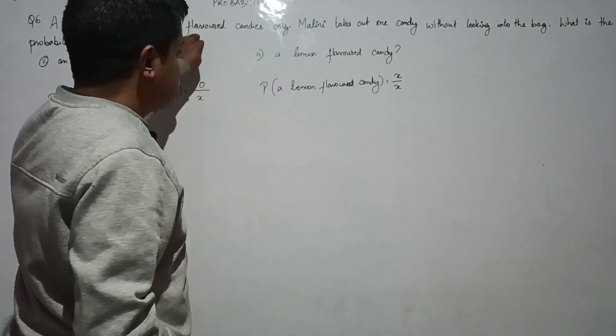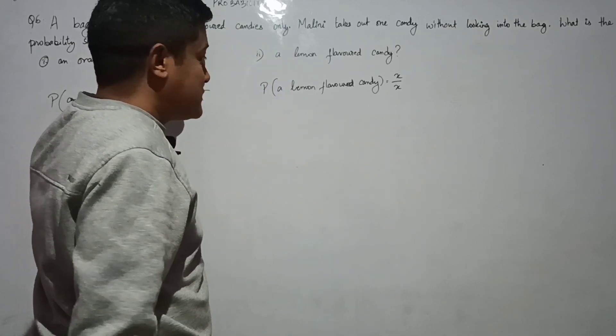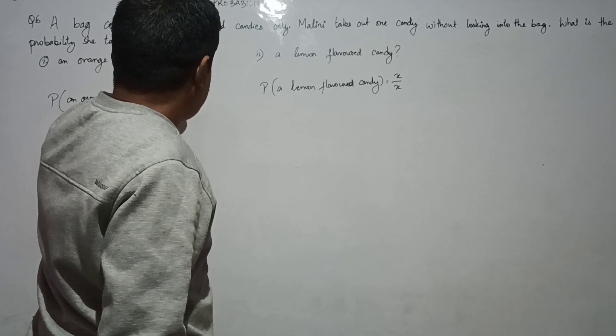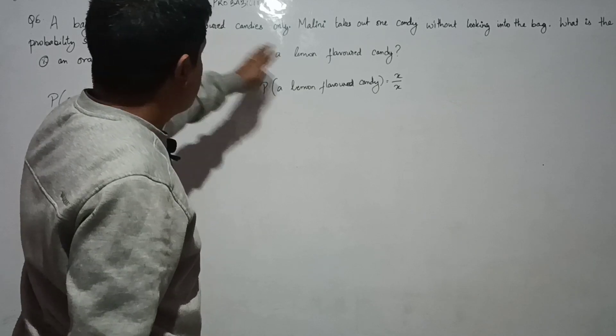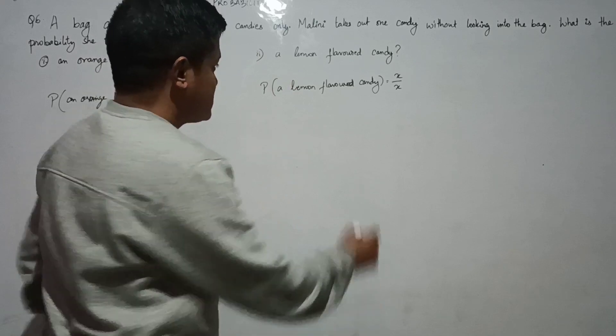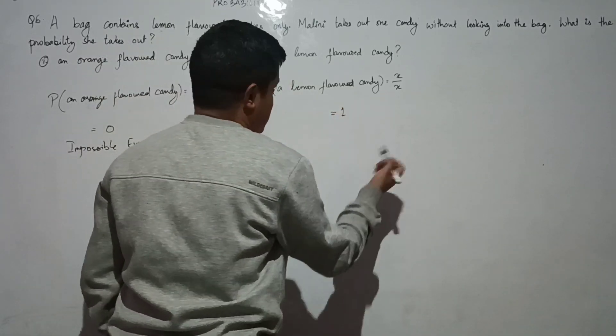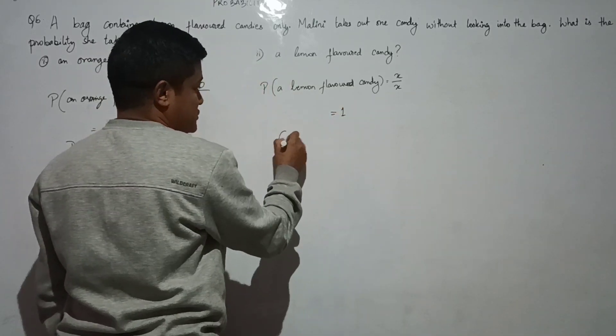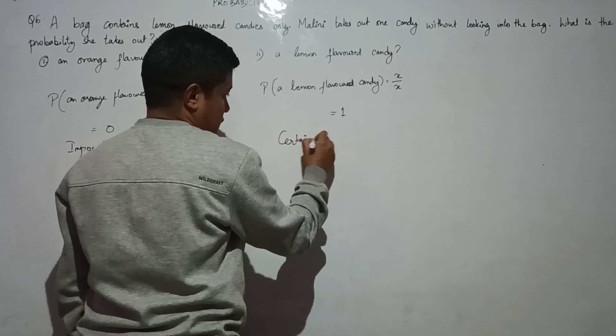Number of favorable events by total number of events. So X over X equals one. For sure she will take out lemon candy. It is a certain or sure event.